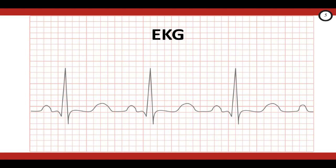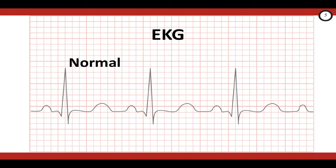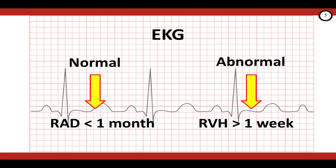Let's talk about the EKG. Let's keep this simple and talk about normal findings you'd expect to see and some abnormal findings that you may see if your patient has congenital heart disease. We all start out life as right heart dominant and then gradually over the first month of life become left heart dominant. So it's totally normal to see right axis deviation on your EKG in the first month of life. What's abnormal is to see right ventricular hypertrophy. A good rule of thumb is to have some suspicion that it's abnormal at one week of life and consider it to be definitely abnormal past one month of life. On the other hand, left ventricular hypertrophy should be considered abnormal at any age.